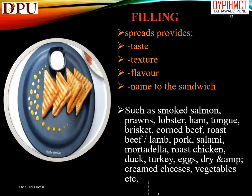Filling provides taste, texture, and flavor, and gives name to the sandwich. Examples include: smoked salmon, prawns, lobster, ham, tongue, brisket, corned beef, roast beef, lamb, pork, salami, mortadella, roast chicken, duck, turkey, eggs, dry and damp cream cheeses, vegetables, etc.